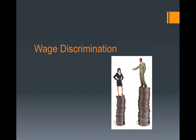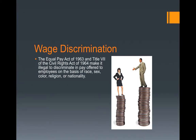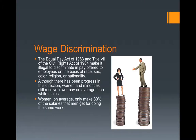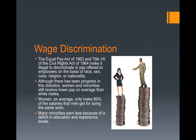There is also wage discrimination. The Equal Pay Act of 1963 and Title VII of the Civil Rights Act of 1964 make it illegal to discriminate in pay offered to employees on the basis of race, sex, color, religion, or nationality. Although there has been progress in this direction, women and minorities still receive lower pay, on average, than white males. Women, on average, only make 80% of the salaries that men get for doing the same work. Many minorities earn less because of a deficit in education and experience levels.